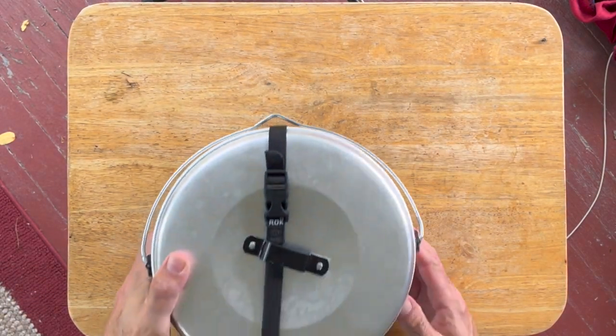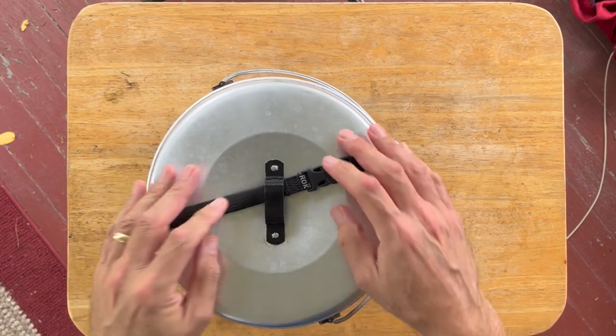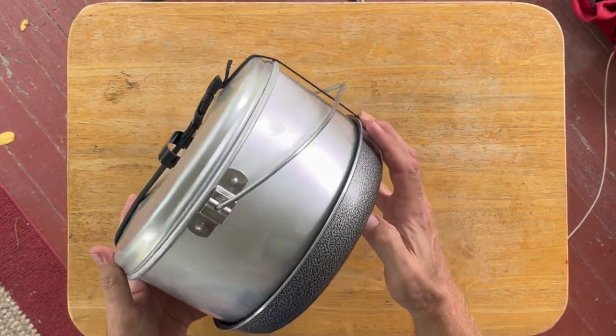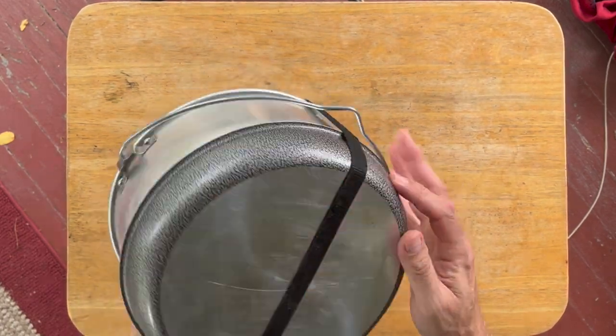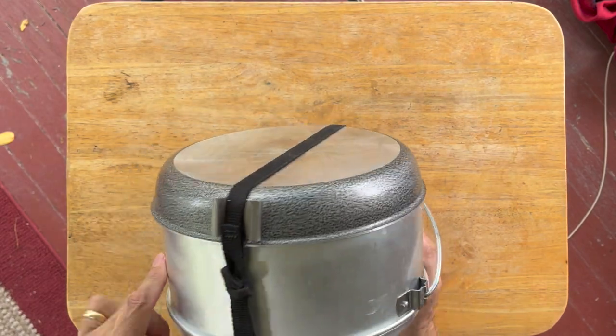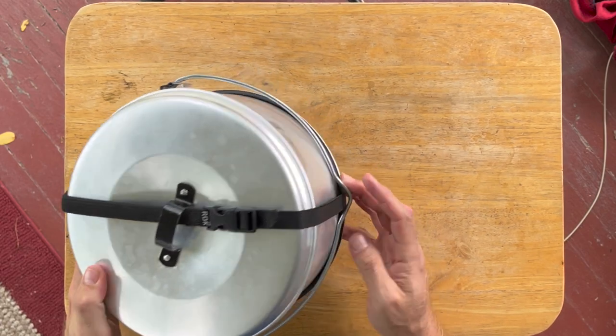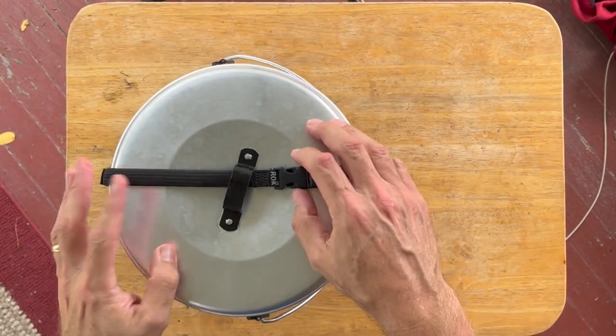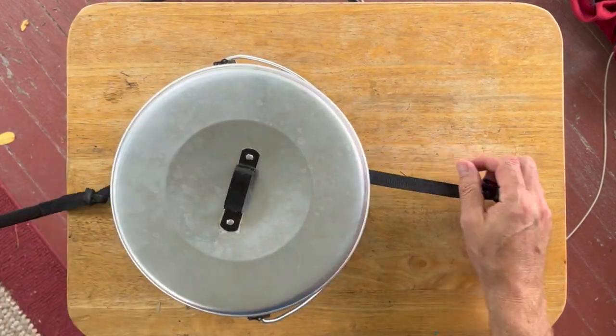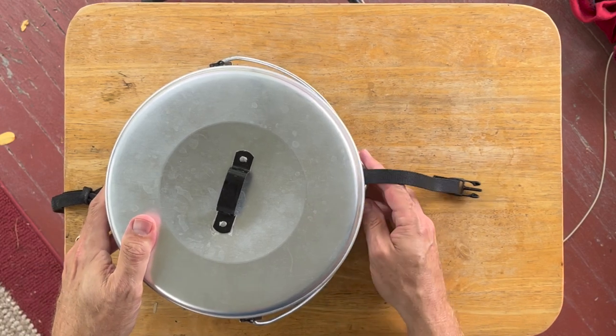I've been asked a few questions about how the lid of the 4.5 liter billy pot works with the skillet on the Trangia set that I have for overlanding. So I thought I would quick show how that fits together.